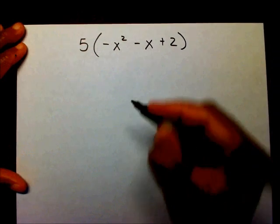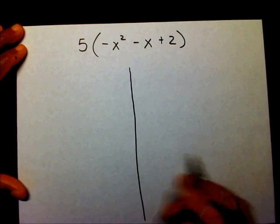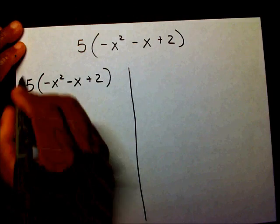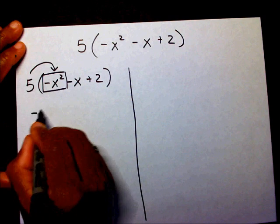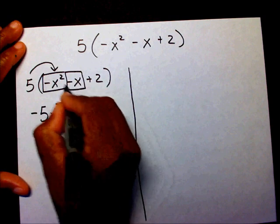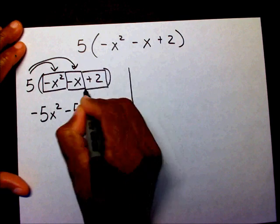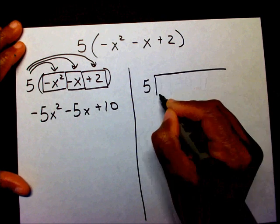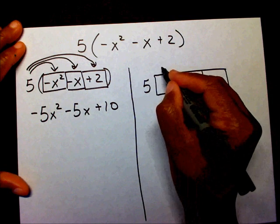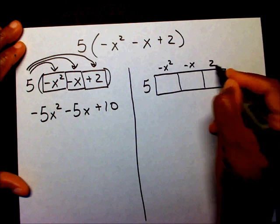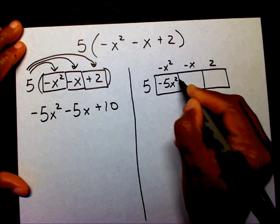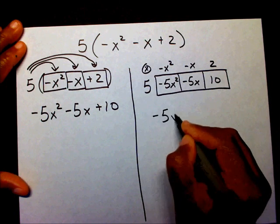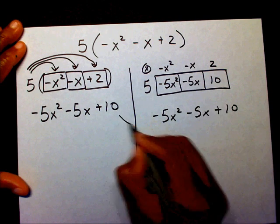I'll show you both methods. We have 5 times negative x squared minus x plus 2. Multiplying: 5 times negative x squared is negative 5x squared, 5 times negative x is negative 5x, and 5 times 2 is plus 10. Using the box method, create a 1 by 3 box, write negative x squared, negative x, and 2 above it, and 5 on the side. You get negative 5x squared, negative 5x, and 10. So the answer is negative 5x squared minus 5x plus 10 — same answer, two different methods.